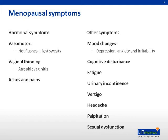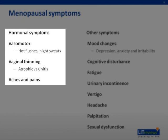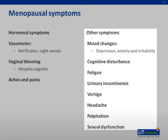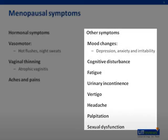Menopausal symptoms can be hormonal or non-hormonal. Hormonal symptoms include vasomotor symptoms such as hot flushes and night sweats; vaginal thinning causing atrophic vaginitis, resulting in painful intercourse and increasing the risk of vaginal infections; as well as aches and pains causing joint pain and stiffness. Other symptoms unrelated to hormonal changes include mood-related changes, cognitive disturbances, fatigue, urinary symptoms, vertigo and headache, palpitations, and sexual dysfunction.